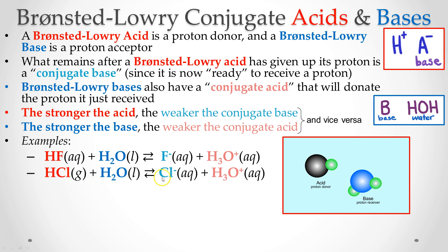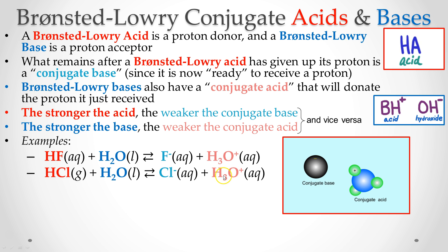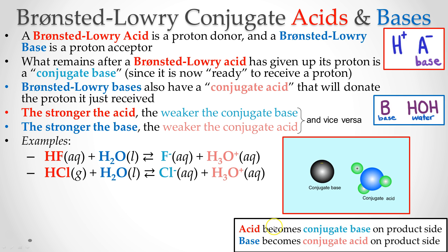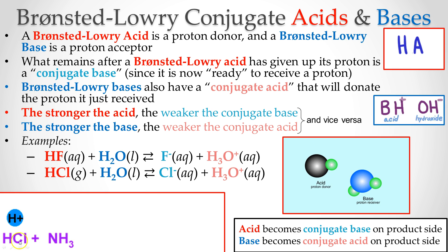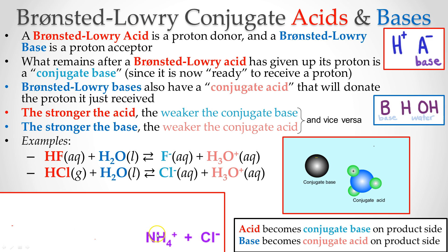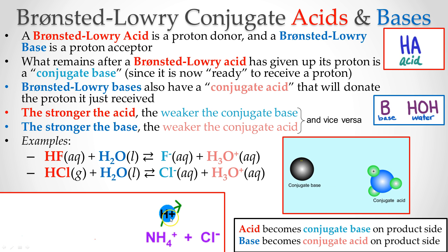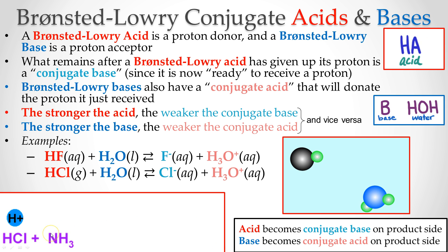Here's another one: hydrochloric acid plus water — the chloride anion is my conjugate base, and the hydronium is my conjugate acid, since that's now ready to donate a proton. The acid will always become the conjugate base on the product side, and the base will always become the conjugate acid on the product side. Here, hydrochloric acid donates a proton to ammonia, so ammonia — now that it's picked up a proton — becomes the conjugate acid, ready to donate that proton back to the conjugate base.